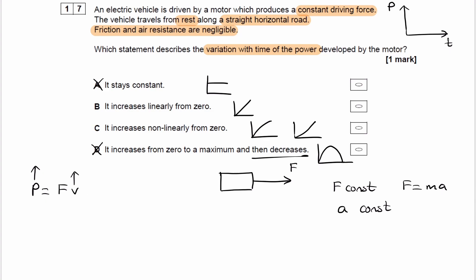So it's either B or C. To figure out whether the power is increasing linearly with time or non-linearly with time, we need to get some kind of time dependence in this equation. We need to get t in that equation.